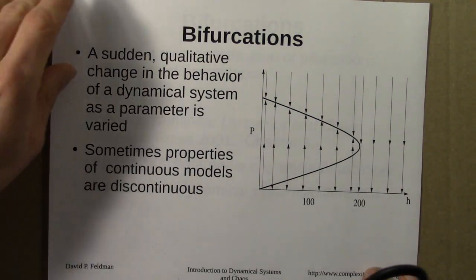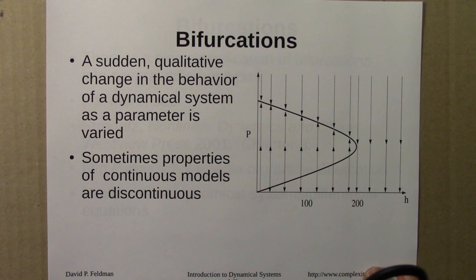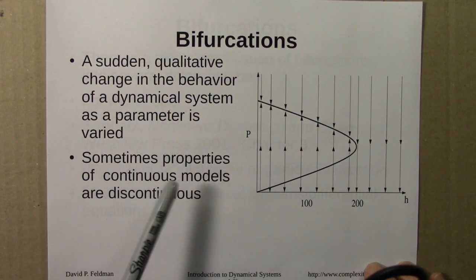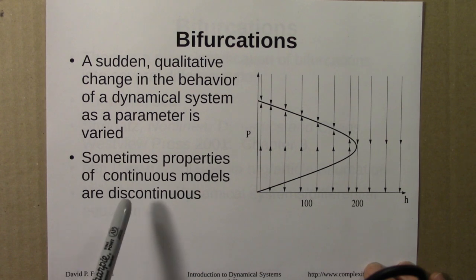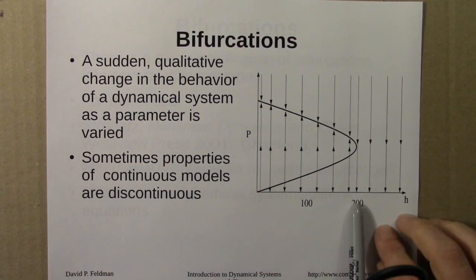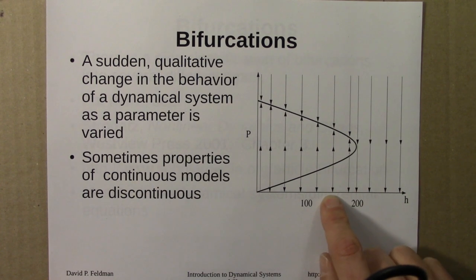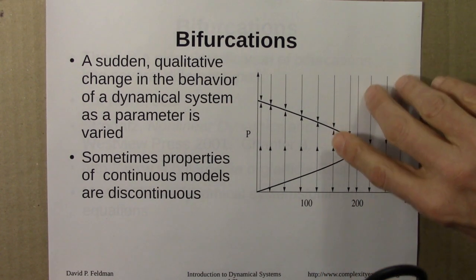Then we turn from bifurcation diagrams to bifurcations themselves. A bifurcation is a sudden qualitative change in the behavior of a dynamical system as a parameter is varied. By qualitative change, I mean a change in the number of fixed points or a change in their stability. Here we have a bifurcation on this diagram around 200. Above 200, we have no fixed points. Below 200, we have two fixed points—one stable, one unstable.